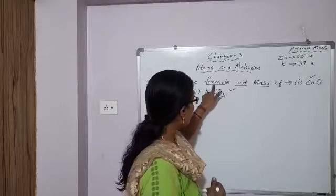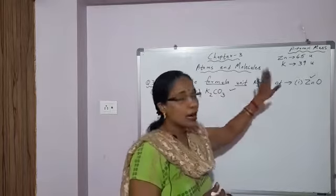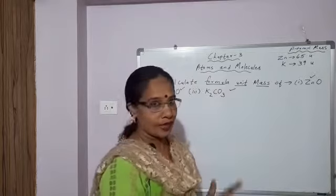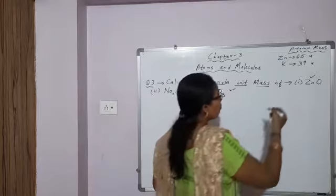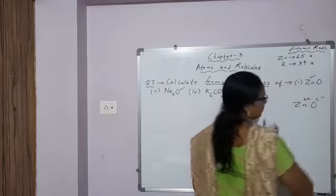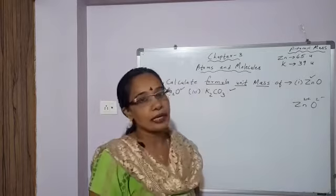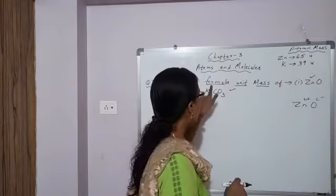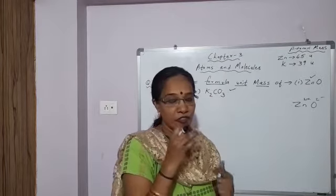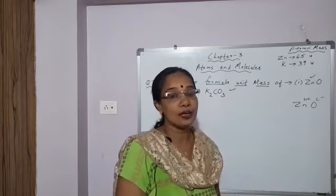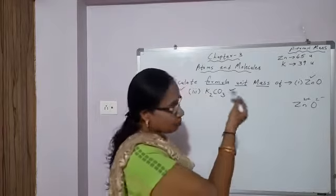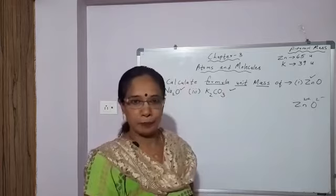Here we are using the term formula unit mass. We use this for ionic compounds in which one of the ions is a positive ion and the other is a negative ion. So in the case of ionic compounds, we use the term formula unit mass — we do not use the term molecular mass.